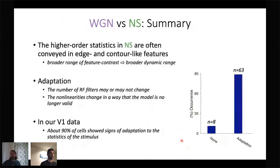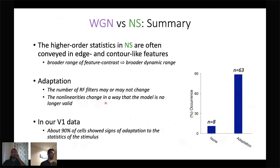To wrap up, cells showing an adaptation effect in our V1 population were about 90%, in the forms of a possible change in the number of receptive filters and change in the feature contrast response functions. Among these cells, more than 95% showed a significant amplification in their response functions within the low feature contrast range when the stimulus was switched from natural scenes to white Gaussian noise.